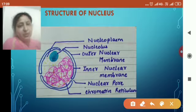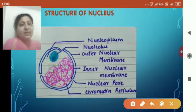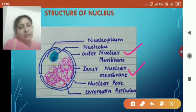Now the outermost covering of the nucleus is the outer nuclear membrane and the inner nuclear membrane. This means it is a double membrane bound structure, and a nuclear pore is also present along with that.